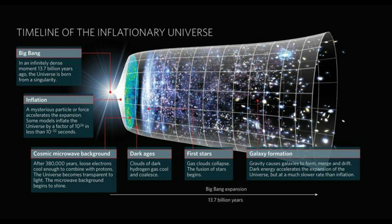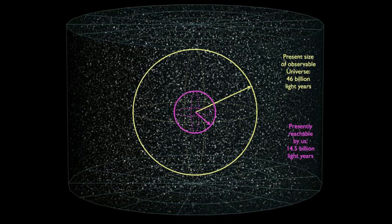The observable universe is about 93 billion light years across, even though the universe is only 13.8 billion years old. This is because the universe has been expanding. If 13.8 billion years is the age on one side, and the same on the other, the total is about 27.6 billion light years — but because of expansion we observe 93 billion light years.